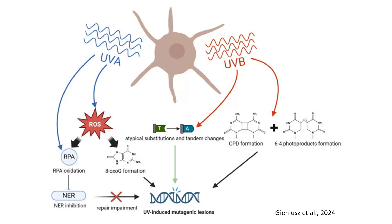UVB radiation more directly damages DNA. It causes the formation of cyclobutane pyrimidine dimers and 6-4 photoproducts — two types of photochemical lesions that distort the DNA structure. These lesions can lead to atypical base substitutions, such as thymine to adenine changes. The oxidative stress caused by UVA also leads to the formation of 8-oxoguanine, a common oxidative DNA lesion, which further impairs repair and promotes mutagenesis.